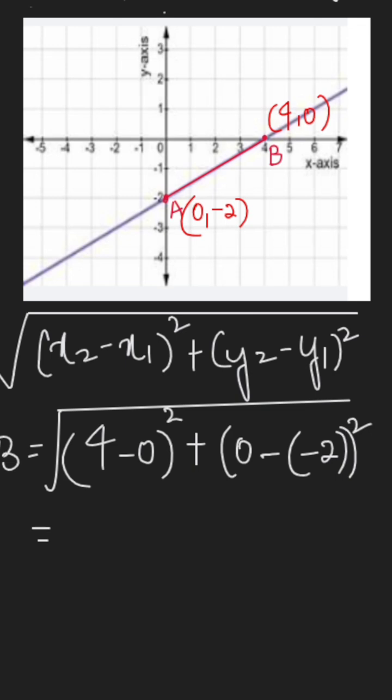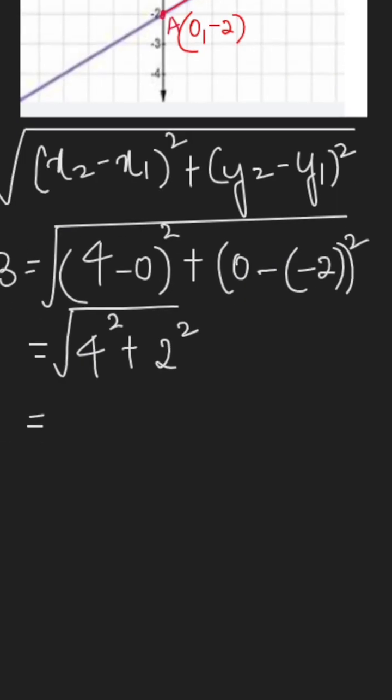So this will be equal to 4 minus 0 is 4 square, plus 0 minus negative 2 will be 2, 2 square, the square root of it, which is equal to 4 square is 16 plus 2 square is 4.